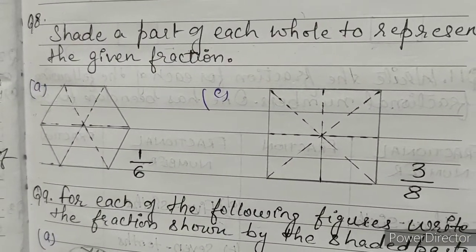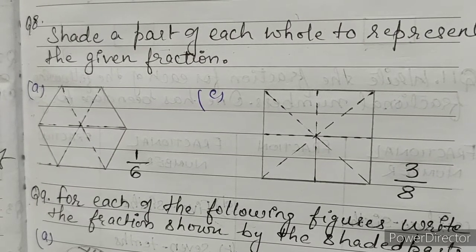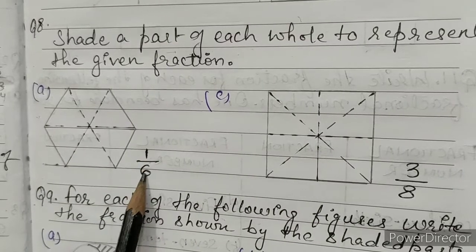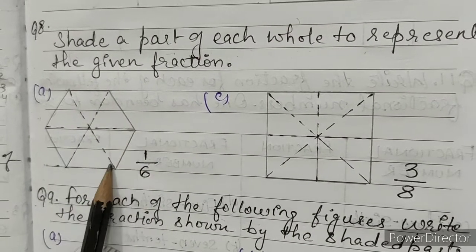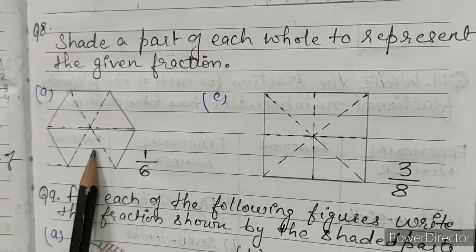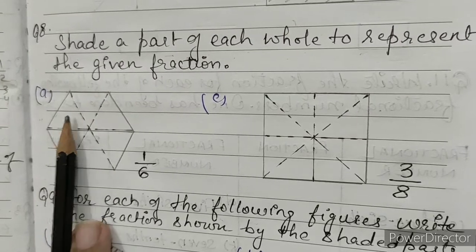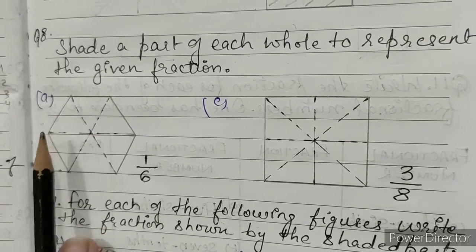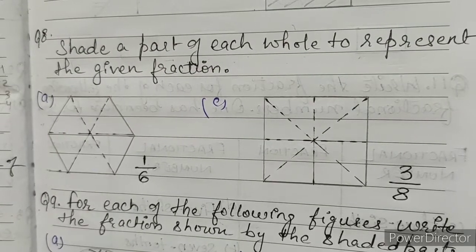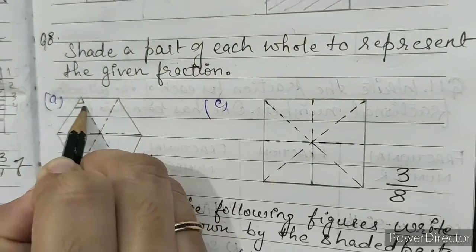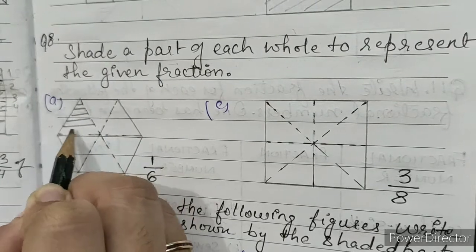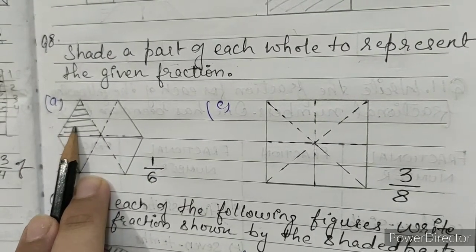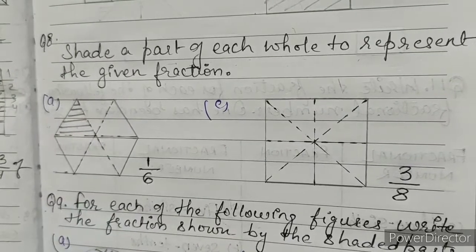Question number 8: shade a part of each whole to represent the given fractions. A: 1 by 6th. This figure is divided into 6 equal parts — 1, 2, 3, 4, 5, 6. We have to shade any 1 part out of 6. This shaded part is 1 sixth of this figure.